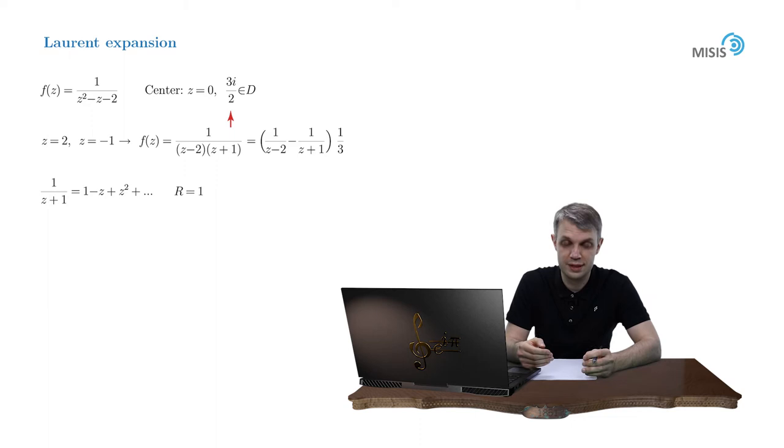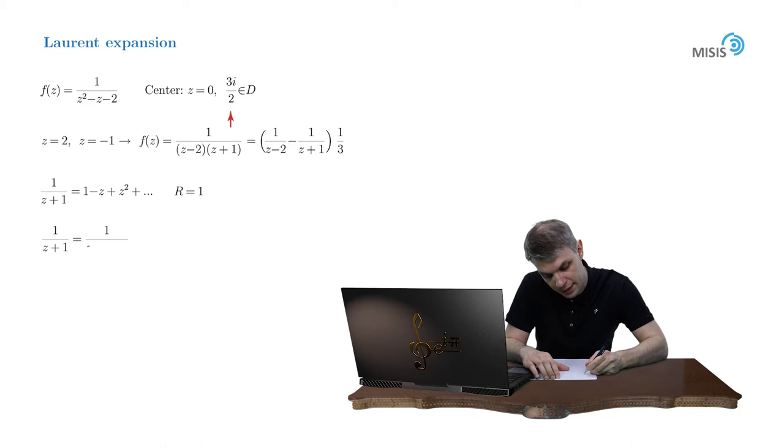So what should we do? Instead of performing a Taylor expansion in positive powers of z, one should try to expand the same expression in negative powers of z, like this. We factor out z and obtain 1 plus 1 over z expression in the denominator.